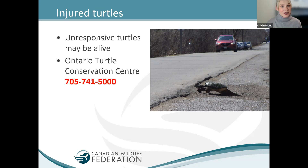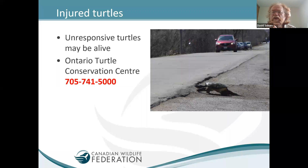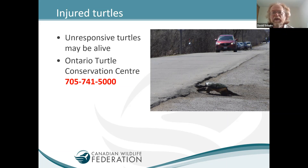Question: what camera do you use to get the photos? The photograph of the map turtle and painted turtle on a log was taken with a standard point-and-shoot camera with about a 30-power zoom, probably from a canoe at a reasonable distance. I don't have any fancy photographic equipment — most of my observations on iNaturalist are from my smartphone, and if it's from a distance I use the point-and-shoot and upload it later.